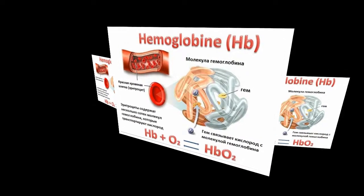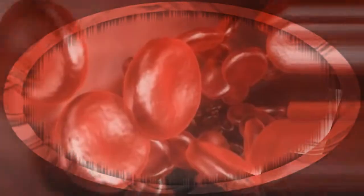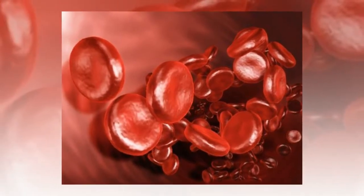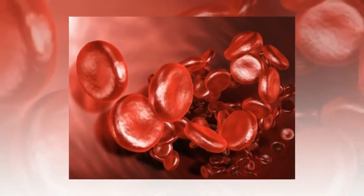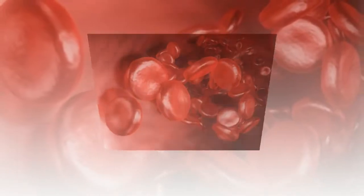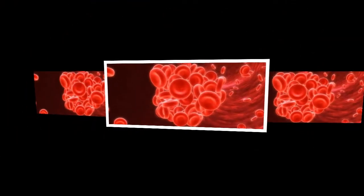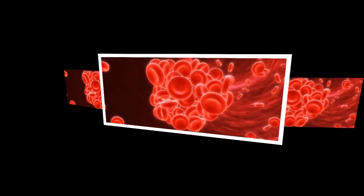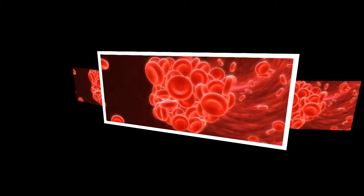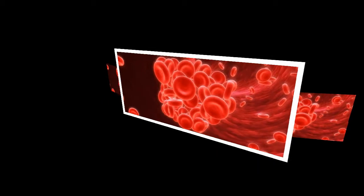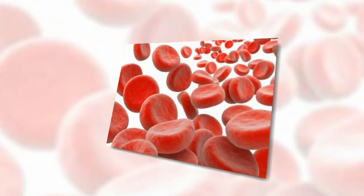Hemoglobin also plays an important role in maintaining the shape of red blood cells. In their natural shape, red blood cells are round with narrow centers, resembling a donut without a hole in the middle. Abnormal hemoglobin structure can therefore disrupt the shape of red blood cells and impede their function and flow through blood vessels.